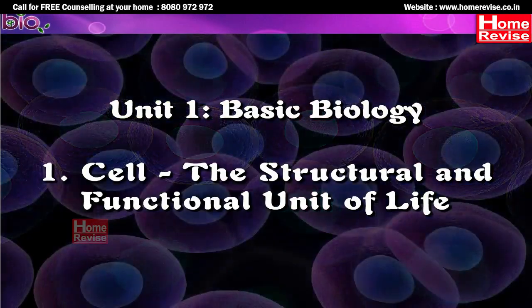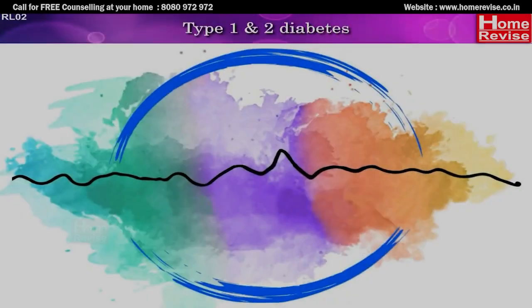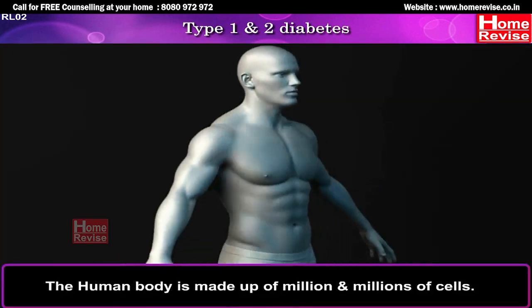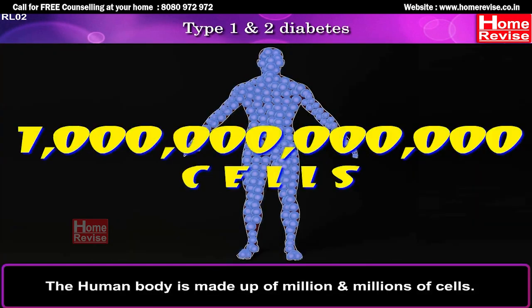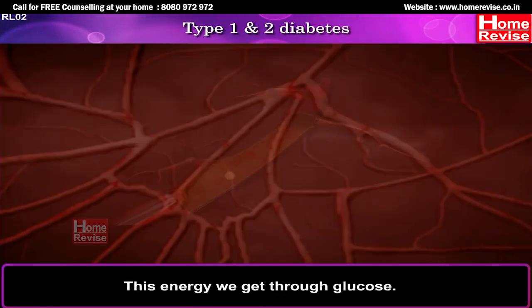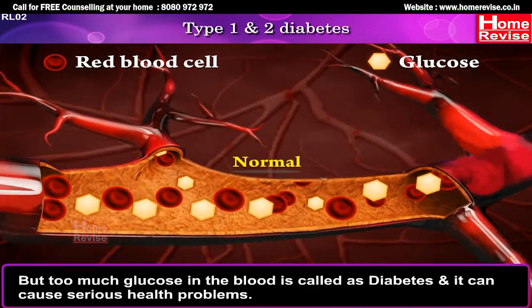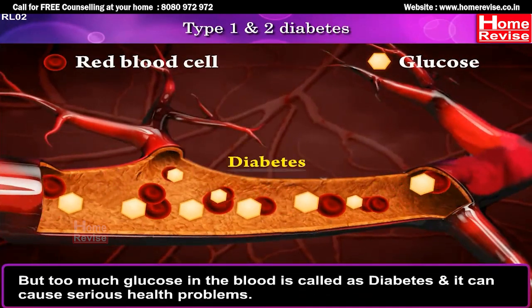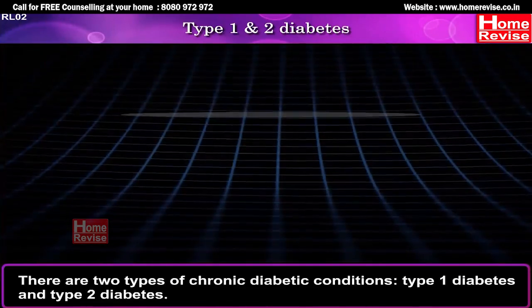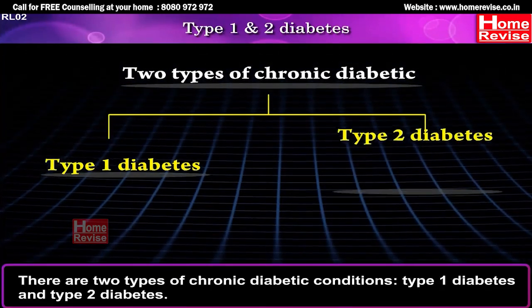Chapter 1: Cell - the structural and functional unit of life. Type 1 and Type 2 Diabetes. The human body is made of millions and millions of cells. All these cells need energy to perform activities, and this energy we get through glucose. But too much glucose in the blood is called diabetes, and it can cause serious health problems. There are two types of chronic diabetic conditions: Type 1 diabetes and Type 2 diabetes.